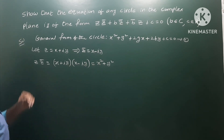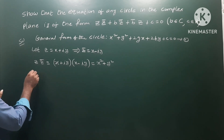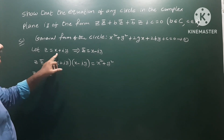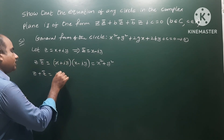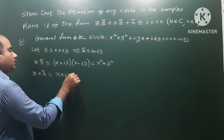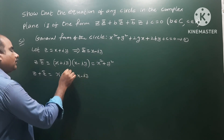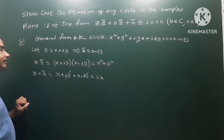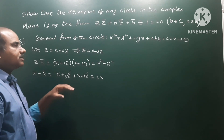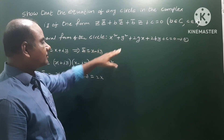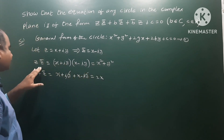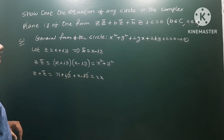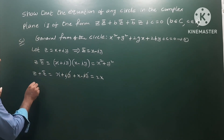Next, z + z̄: that is (x + iy) + (x − iy). The iy terms cancel, giving 2x. So in the general formula, the term 2gx corresponds to g·(z + z̄), since z + z̄ = 2x.